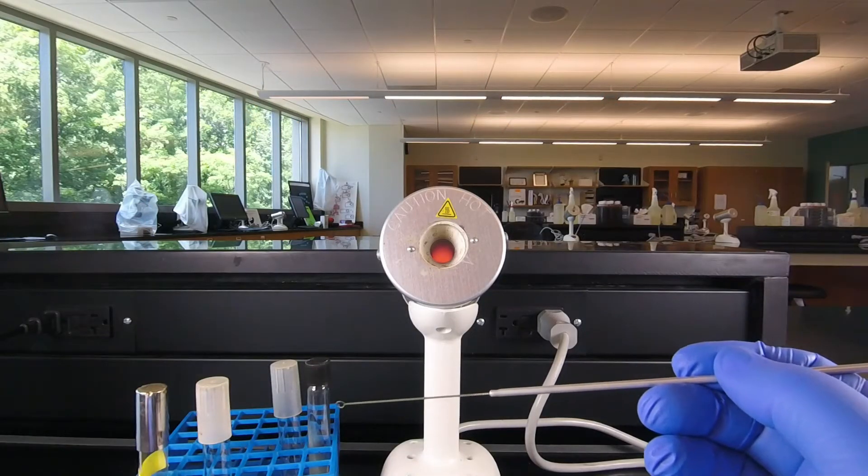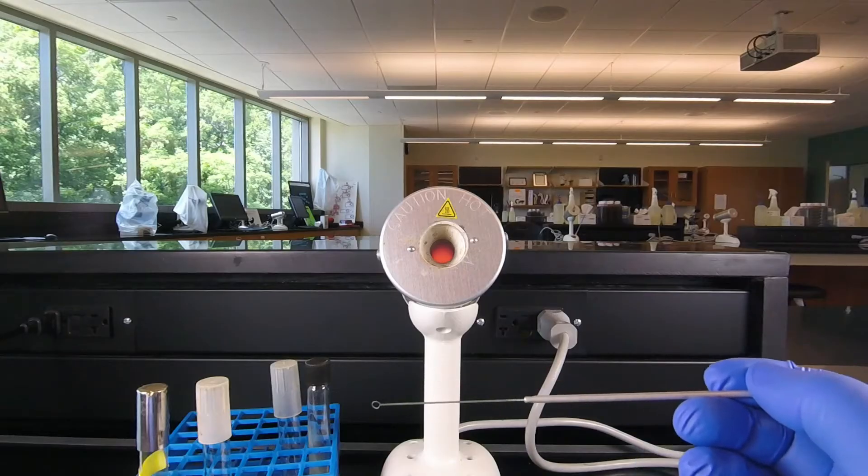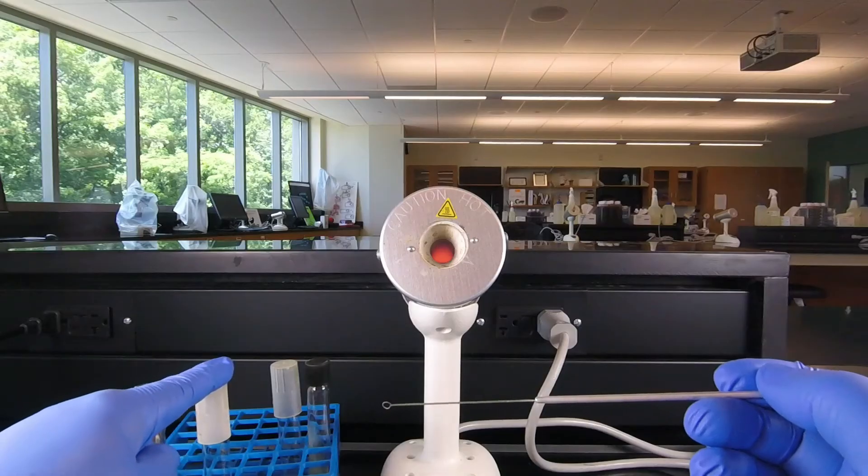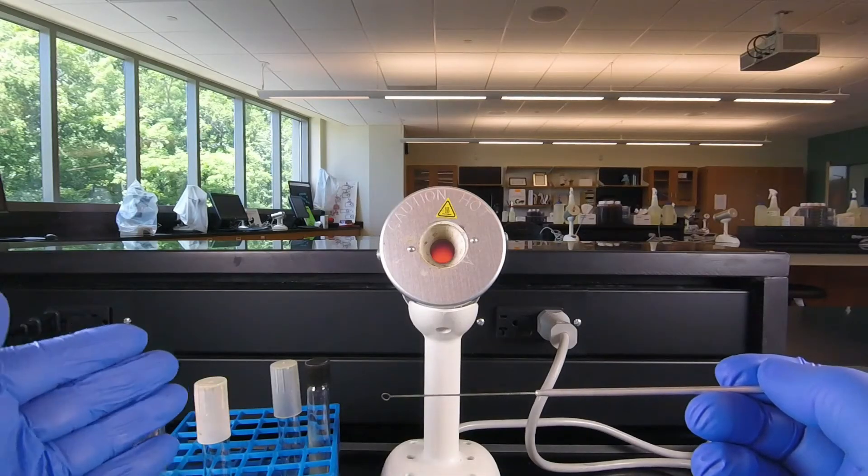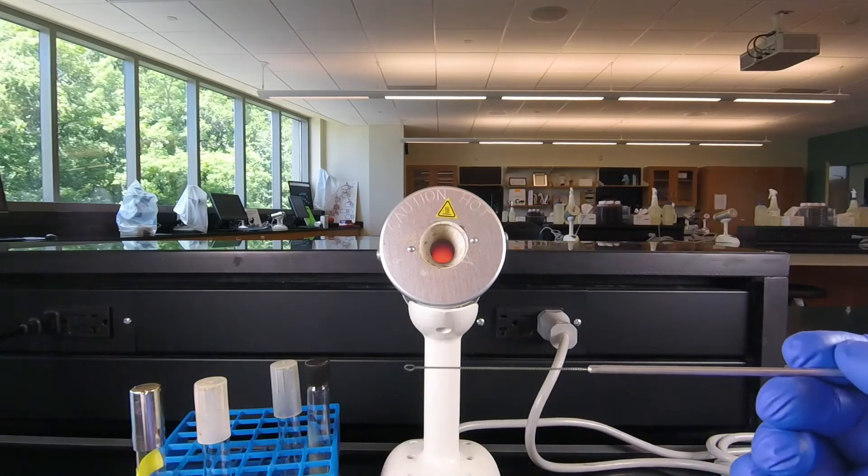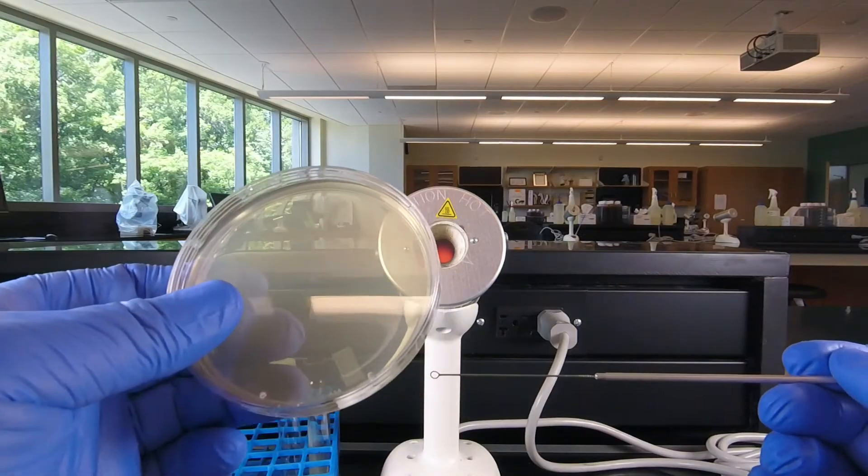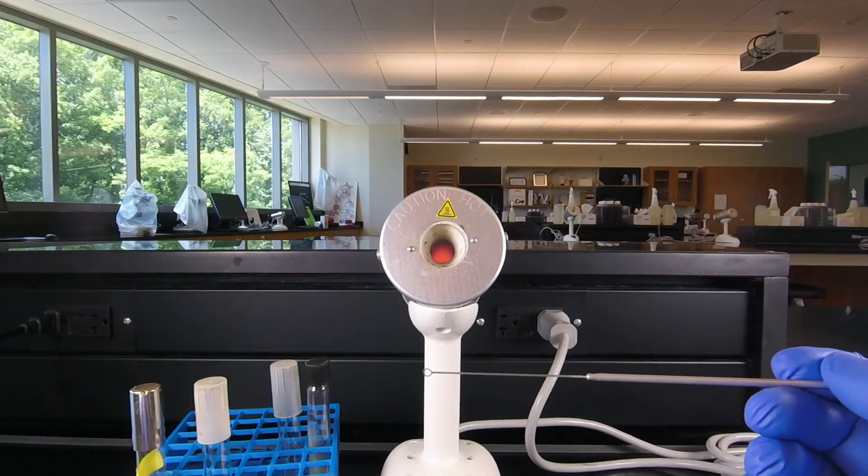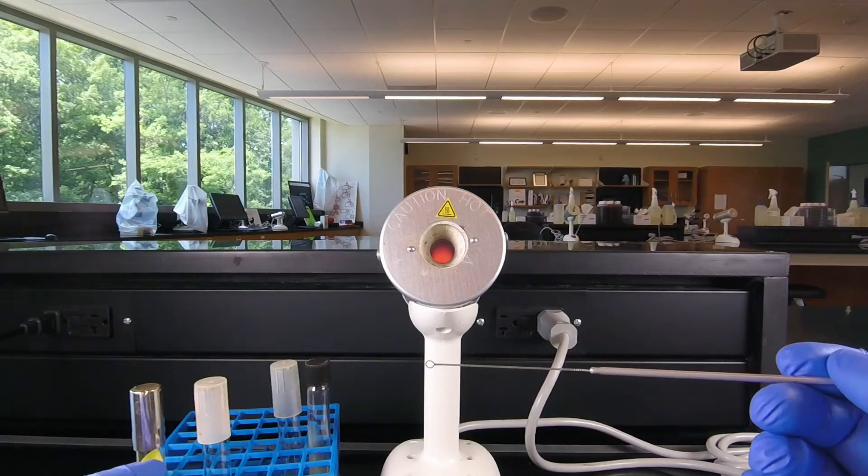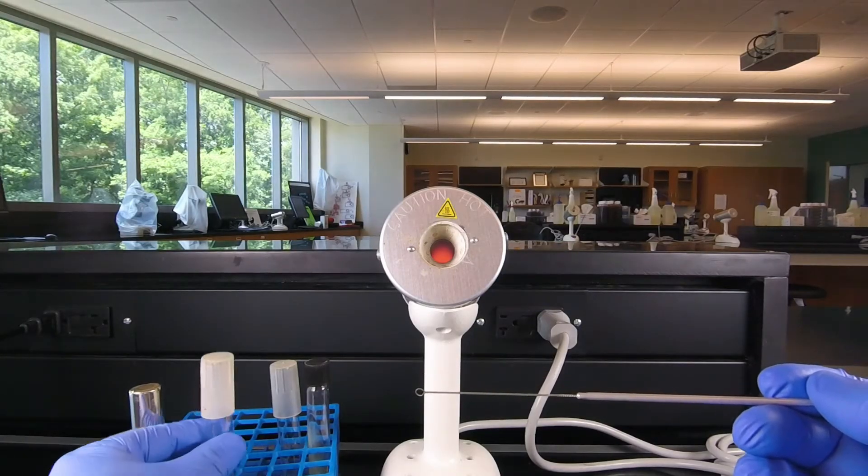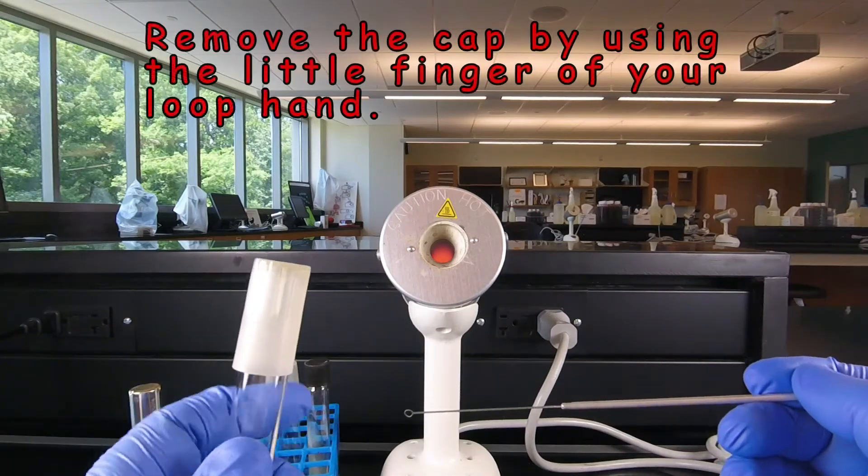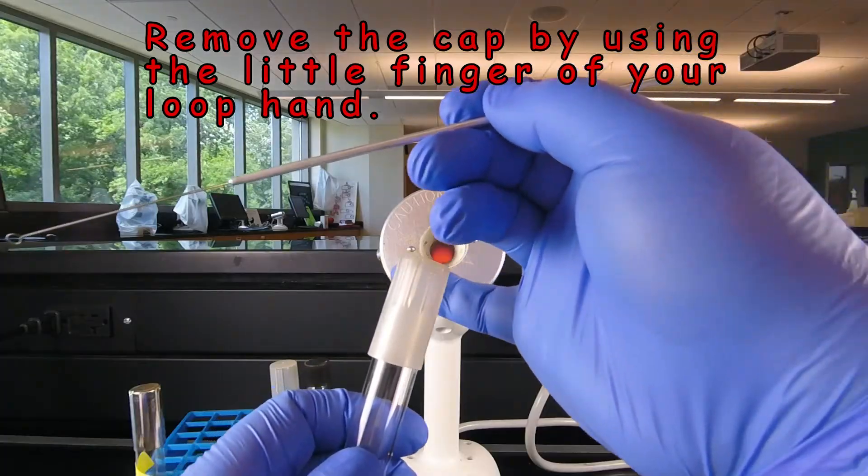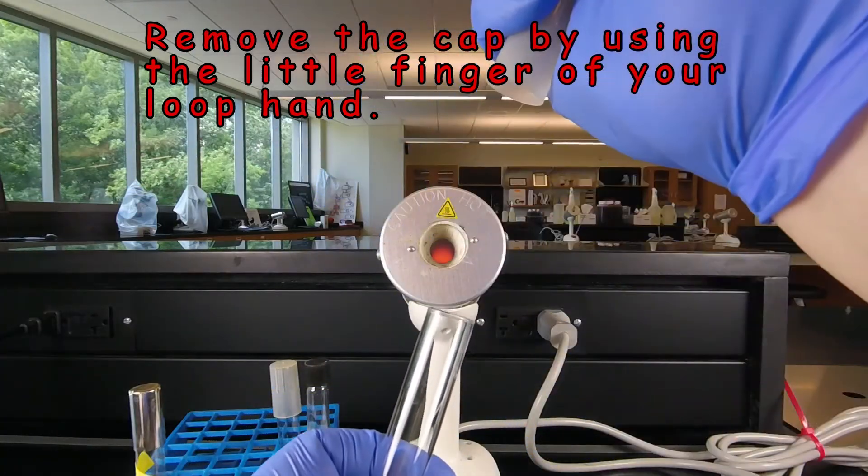Now it's important that we don't leave the tubes open any longer than necessary, only long enough to either get the bacteria out of the pure culture or into the tube we want to grow it in. The longer we leave the cap off of a tube or the longer we leave the lid off of a petri plate the greater chance contaminants are going to fall in and contaminate our cultures. So we pick up the tube by the glass and remove the cap with the little finger of the loop hand. We simply wrap the little finger around the cap and pull it off.